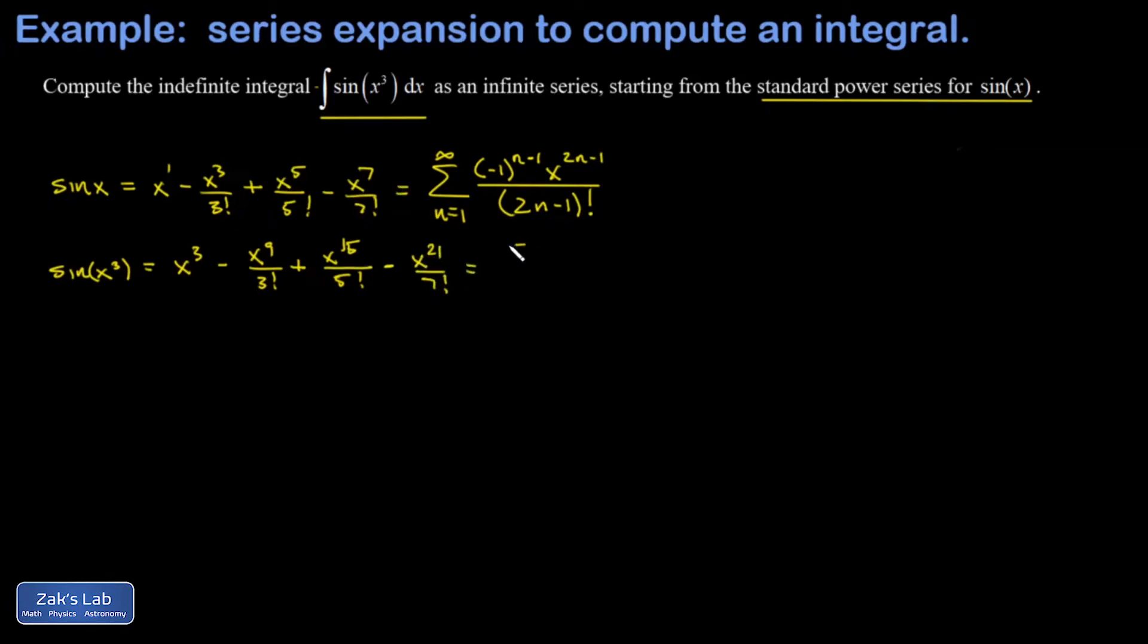In the sigma notation, I'm just replacing x with x cubed, so I have x cubed to the 2n minus 1, and you multiply those exponents so that gives me x to the 6n minus 3.